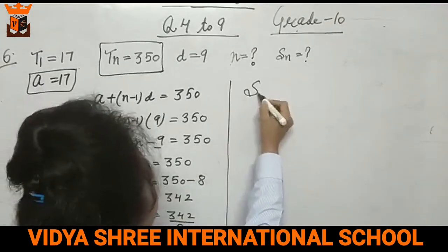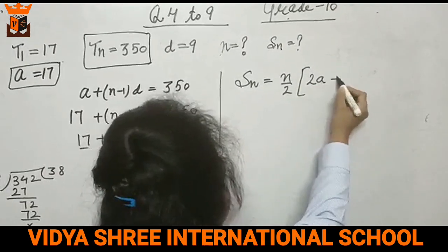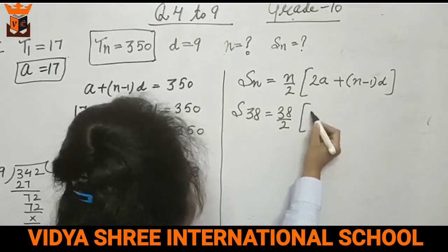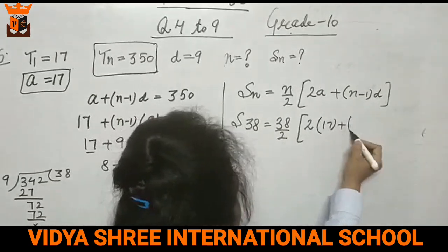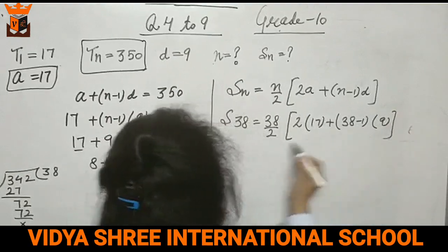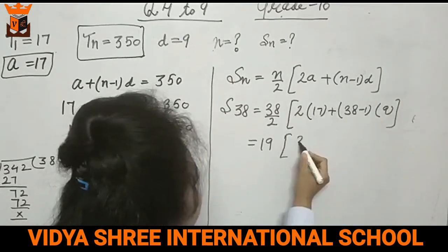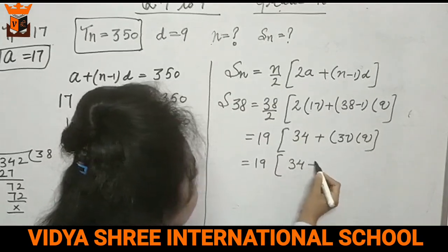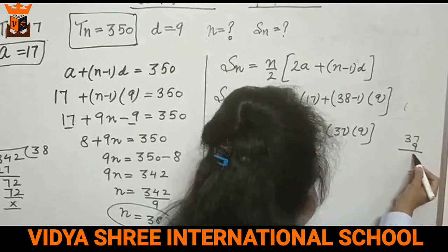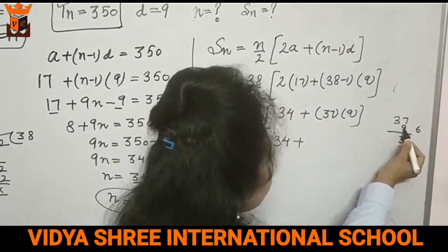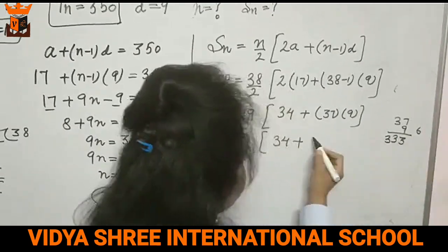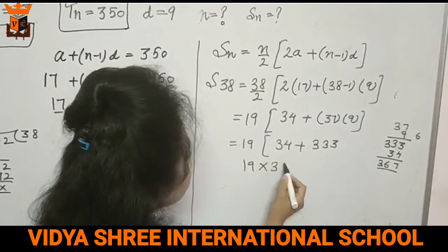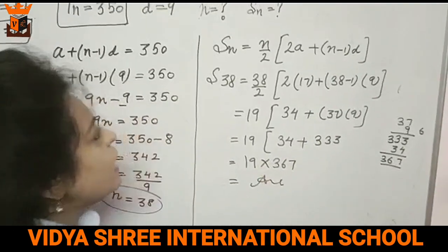So now we will find the sum. We already know the formula for Sn. n by 2 times (2a plus (n minus 1) into d). So S38 equals 38 by 2 times (2 times 17 plus 37 times 9). 38 by 2 is 19. 17 times 2 is 34. And 37 into 9, so 9 times 6 is 63, carry 6. 9 times 3 is 27 plus 6 is 33. So 333. Add 34, this is 367. So 367 multiplied by 19, that is the answer.